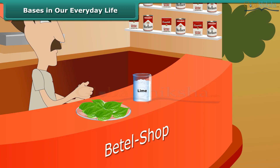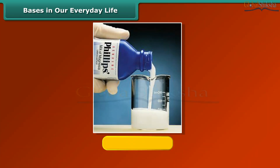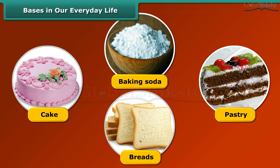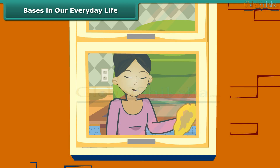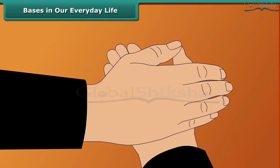Students, the chemical name of lime is calcium hydroxide. Lime water is prepared by dissolving lime in water. Milk of magnesia is a medicine which helps us in digesting our food. It contains magnesium hydroxide, which is a base. The baking soda used in making cakes, breads and other bakery items contains sodium hydrogen carbonate. When your mother cleans the window, put a drop of the solution she is using on your palm and feel it. You will feel it is slippery.